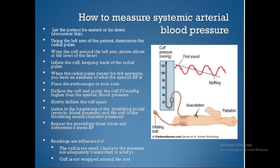Place the stethoscope in your ears. Deflate the cuff and then pump the cuff 20 mmHg higher than the estimated systolic blood pressure. Slowly deflate the cuff again. Listen for the beginning of the throbbing sound — that is the systolic blood pressure — and the end of the throbbing sound — that is the diastolic pressure.